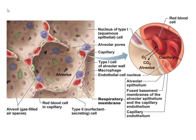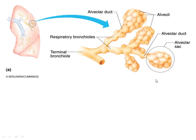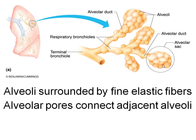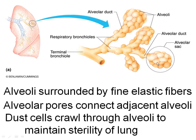The capillaries run around the alveoli — a single cell of capillary lining, a single cell of alveolar lining, and a thin basement membrane allow oxygen and carbon dioxide to move freely by diffusion. The pores connecting adjacent alveoli serve two purposes: they allow air in if one alveolus is damaged, and they allow phagocytic dust cells to crawl through all the alveoli to maintain the sterility of the lung.